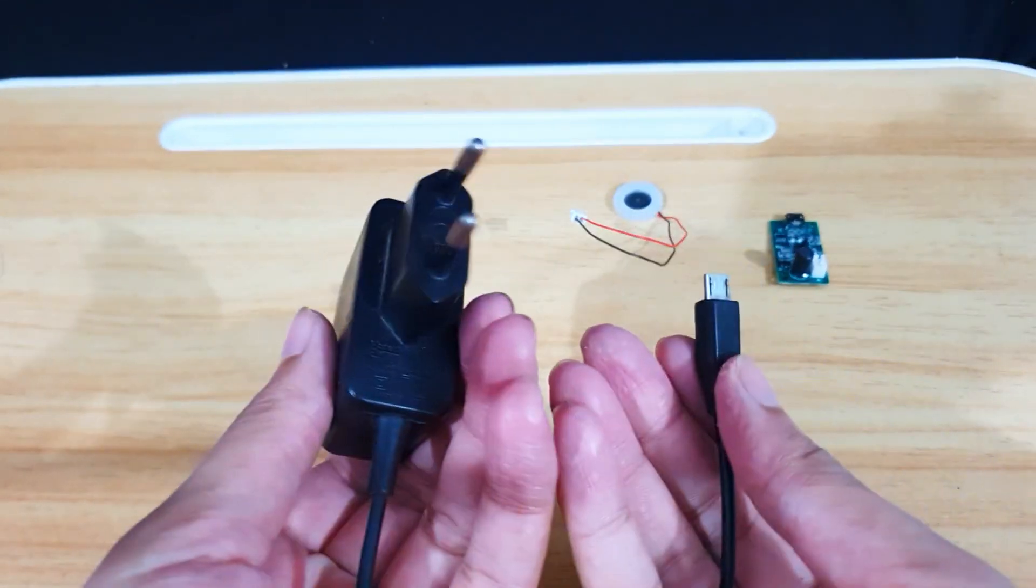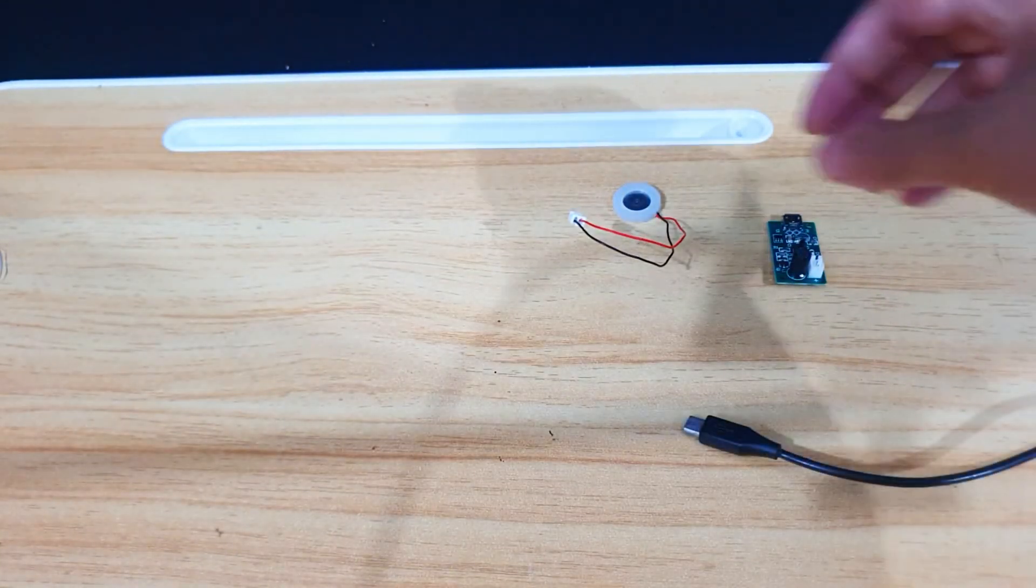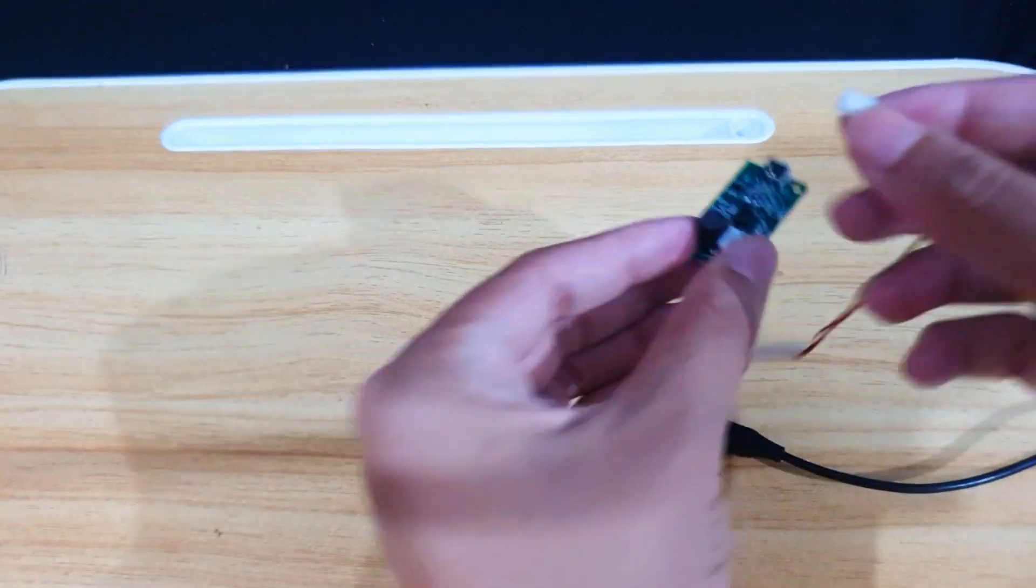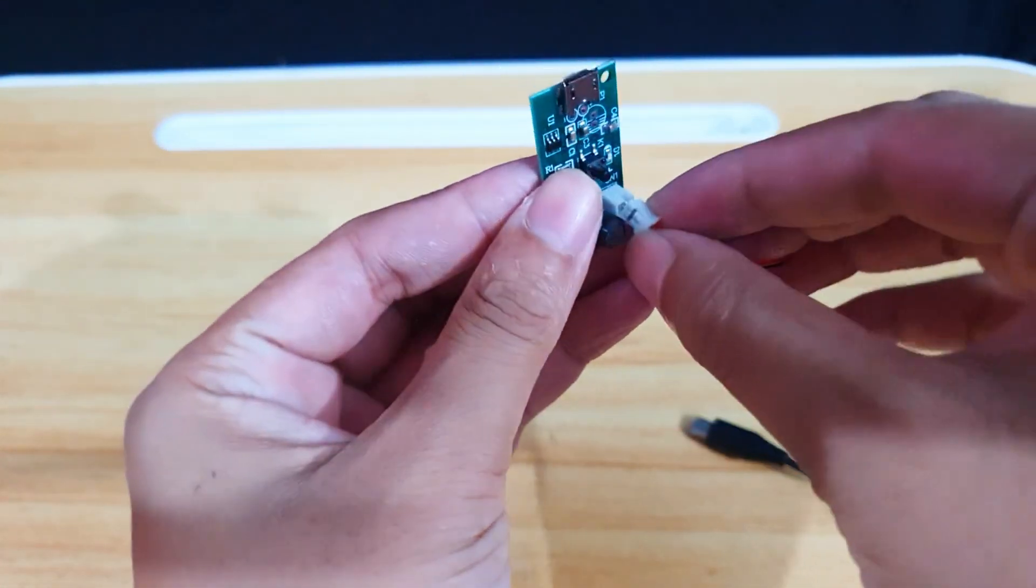This is a 5-volt USB adapter, which I'll use to power the module. First, I'm connecting the mist maker to the module.